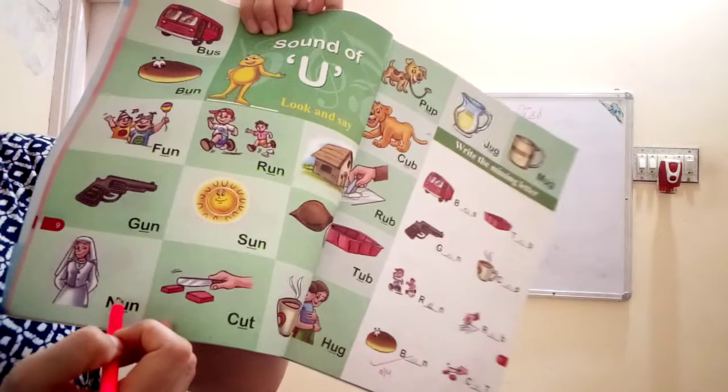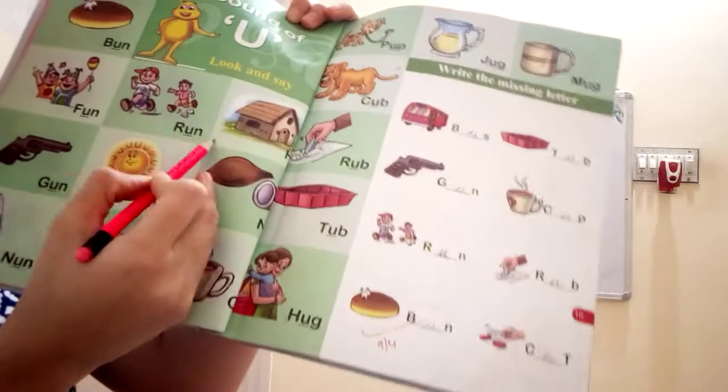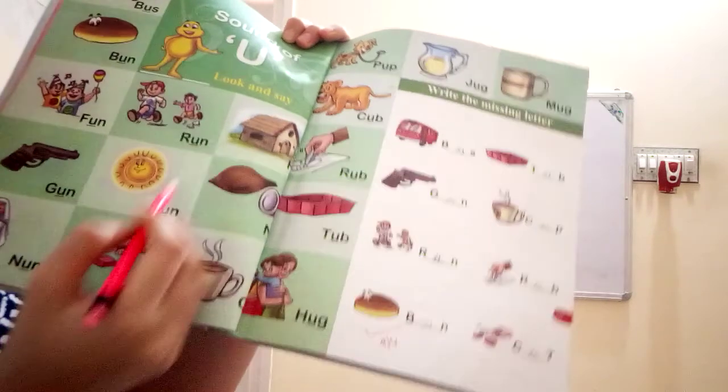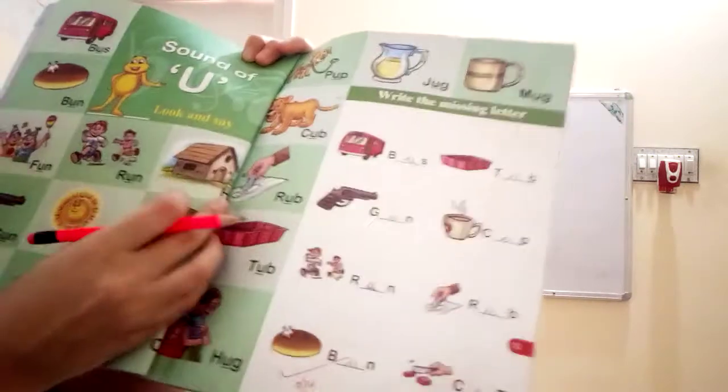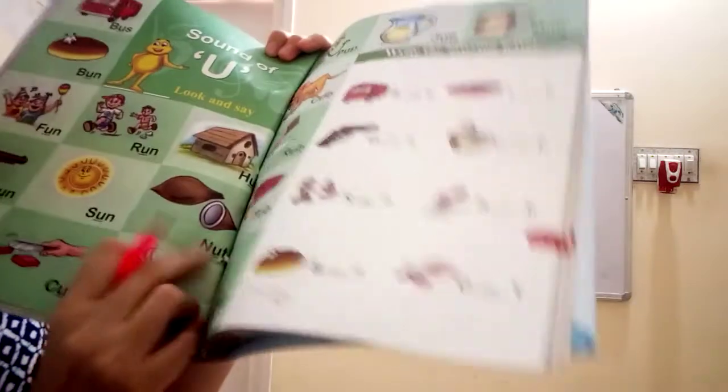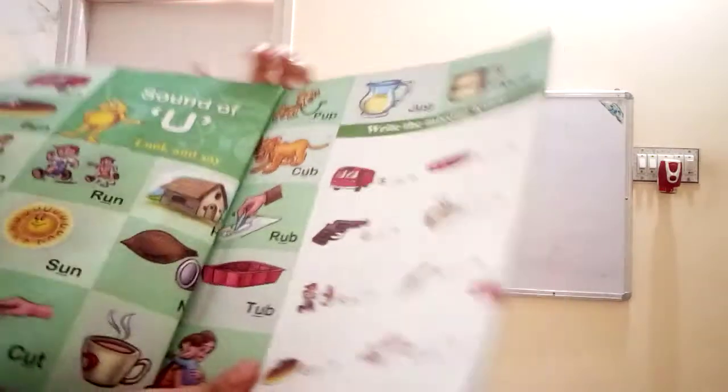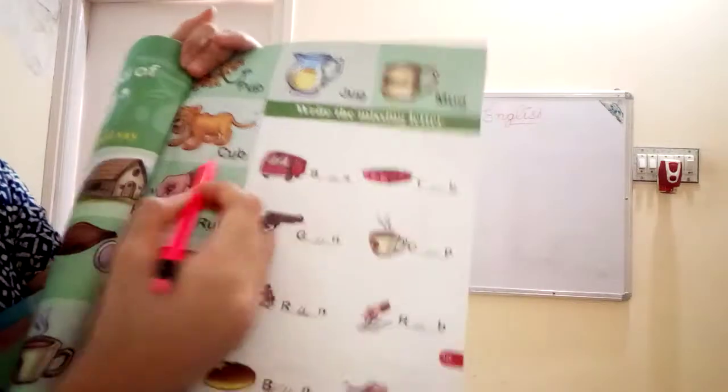In all, U sound is there. R.U.N. Run. S.U.N. Sun. C.U.T. Cut. H.U.T. Hut. N.U.T. Nut. C.U.P. Cup. P.U.P. Pup.